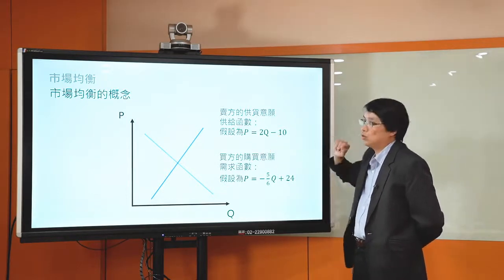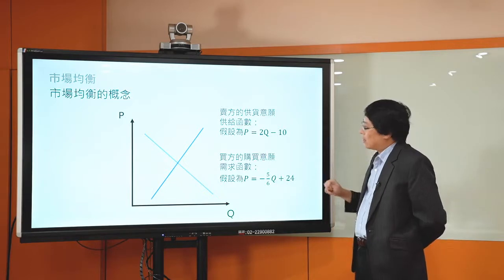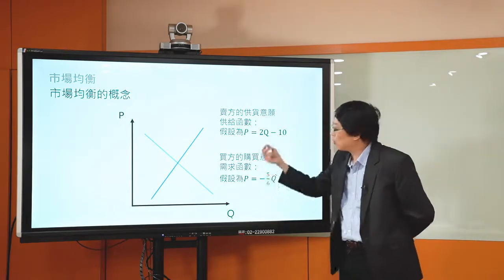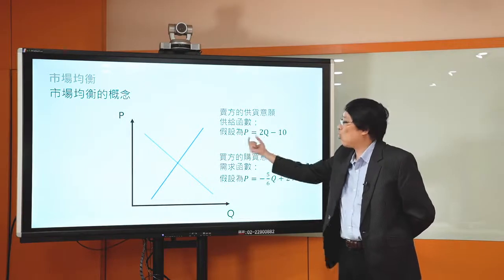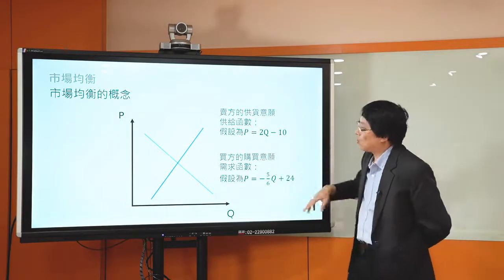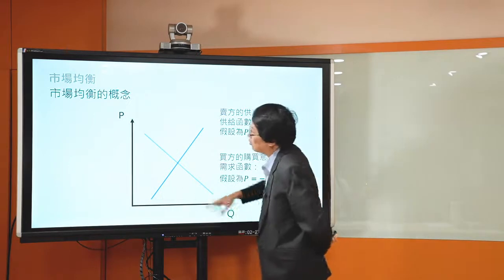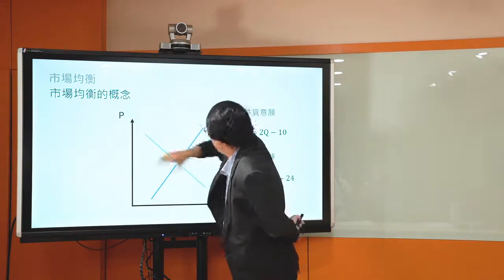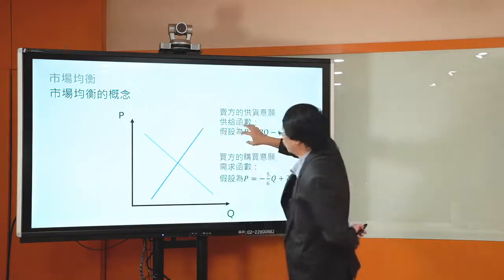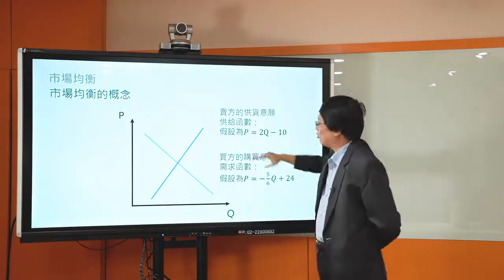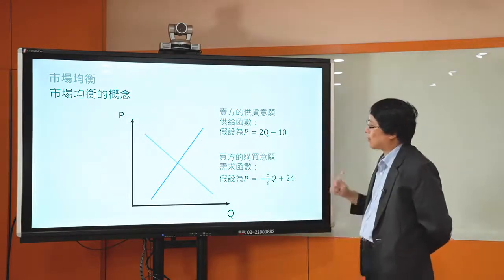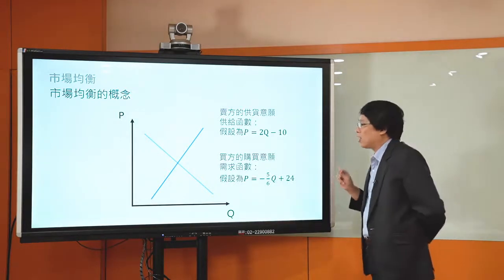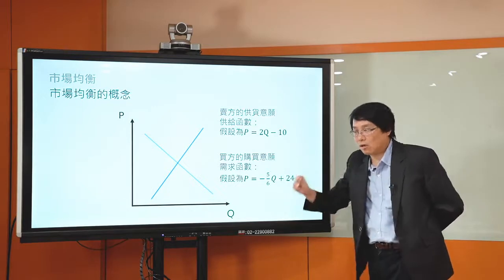這都是其他條件的變動。廠商為了極大化自己的利潤，所以我們看到價格跟賣方願意且能夠供應的數量有一個正斜率的關係，這條線隱含的是賣方的供貨意願。我們就可以把供給函數寫下來，假設一個比較簡單的例子：p = 2q - 10。有些同學習慣把p放在左手邊，因為p是縱軸，所以我們就這樣寫。